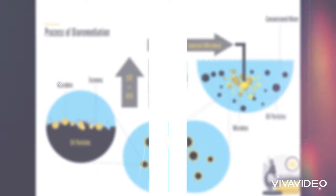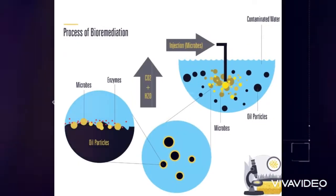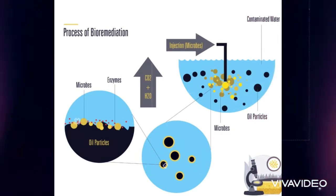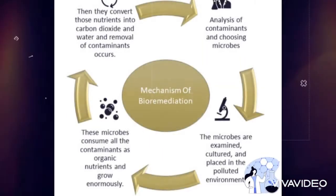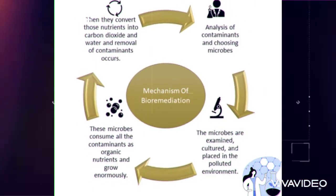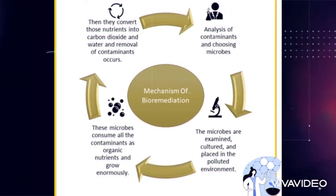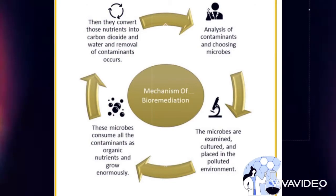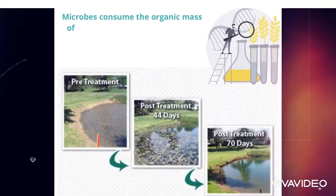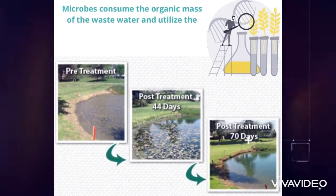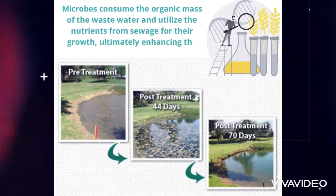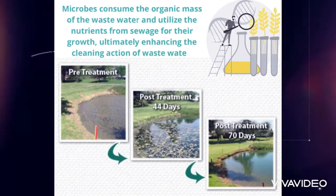However, bioremediation can be effective only in places where environmental conditions permit microbial growth and activity. These microbes consume the organic mass of the wastewater and utilize the nutrients from sewage for their growth, ultimately enhancing the cleaning action of wastewater. The treatment can restore water quality and increases the self-cleansing capacity of the water body. The process also helps reduce biochemical oxygen demand in sewage and reduces odor.